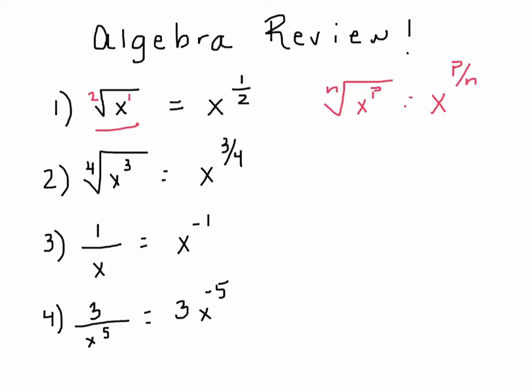The other thing that we want to make sure we understand is negative exponents. 1 over x means exactly the same thing as x to the negative 1 power. 3 over x to the 5th means the same thing as 3x to the negative 5th power.